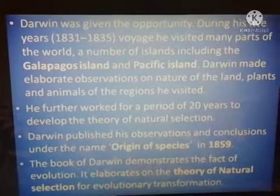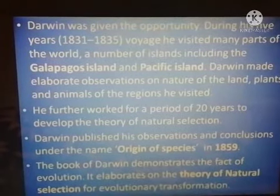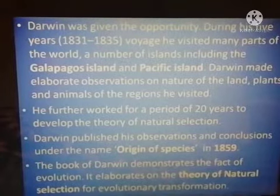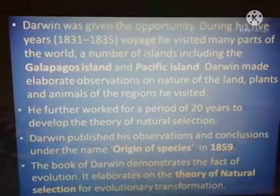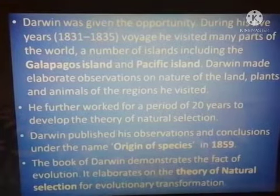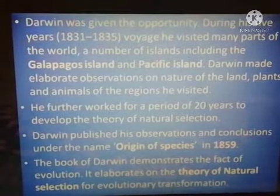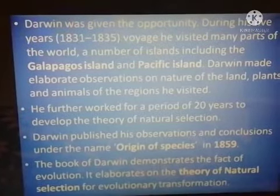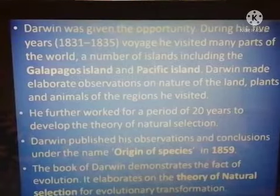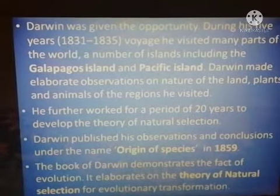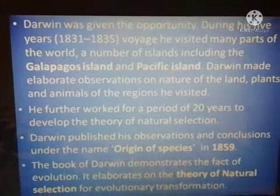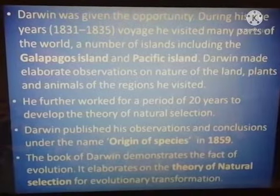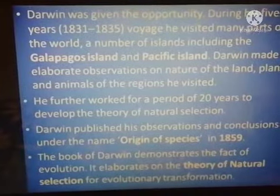Darwin published his observations and conclusions under the name Origin of Species in 1859. He published this book demonstrating the fact of evolution — how that organism originated, how it is changing — all the details were elaborated there. The book demonstrated the reality of evolution and the theory of natural selection for evolutionary transformation, including how characters are transferred from one generation to the next.